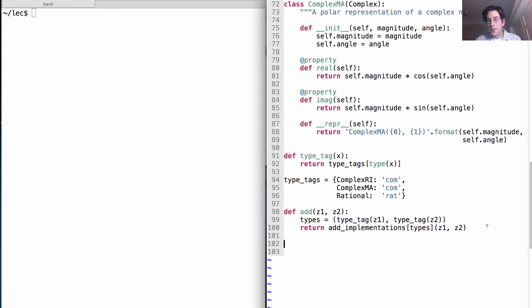Okay, so this call here indicates what's in the add_implementations dictionary. It's going to have tuples of types, such as com, com, as keys.